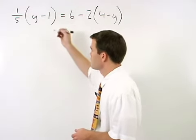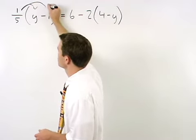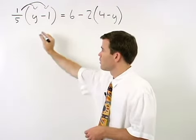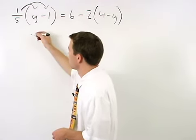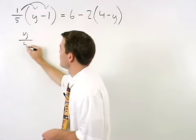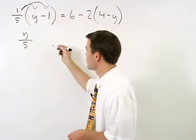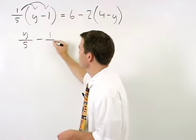So as we distribute this one-fifth through the parenthesis on the left side of the equation, we get one-fifth times y, which is y over 5, and one-fifth times negative 1, which is negative one-fifth.